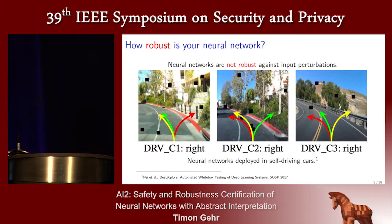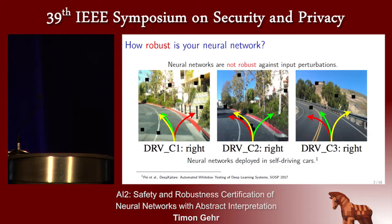As you all probably know, neural networks are not robust against input perturbations. Here we have three very nice images of roads, and it's probably a good idea to go left. But we have three neural networks — a yellow, a green, and a red one — and one of those actually disagrees and tells us to go to the right. Somebody was a bit evil and modified those images; you can see some black patches, and those are responsible for those misclassifications. Of course, we don't want this because as humans, we can see you should go left.